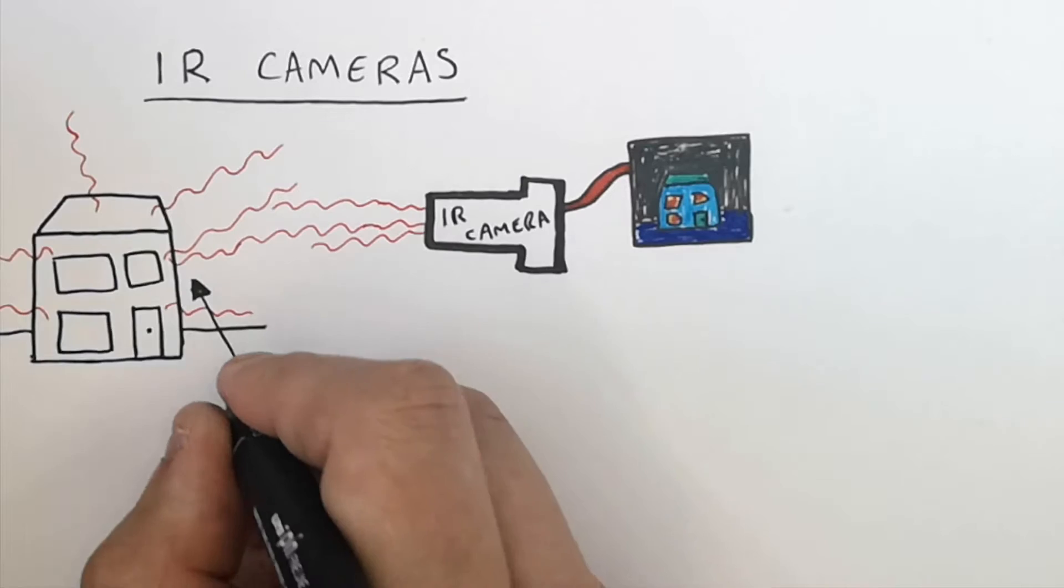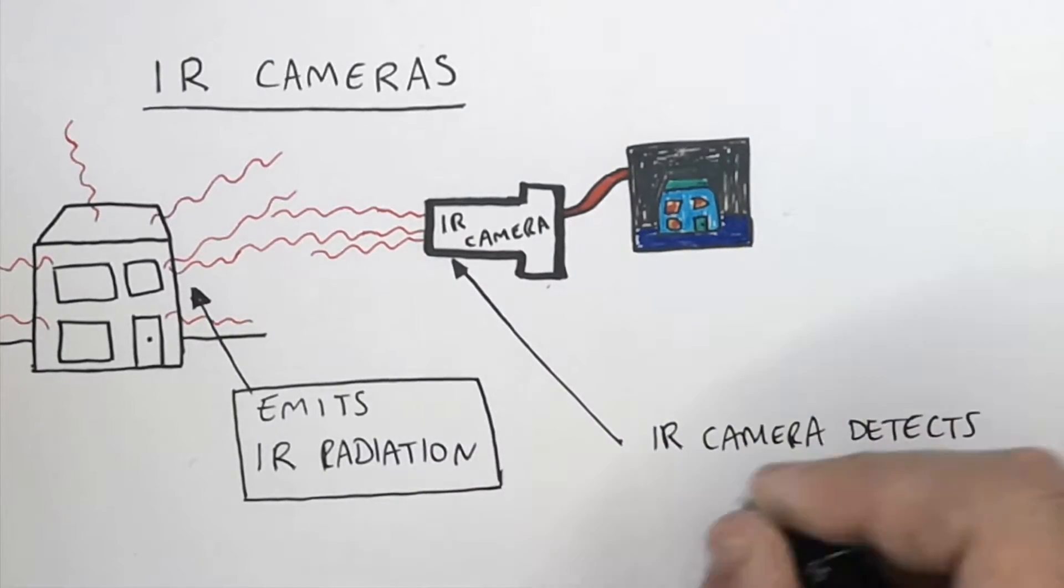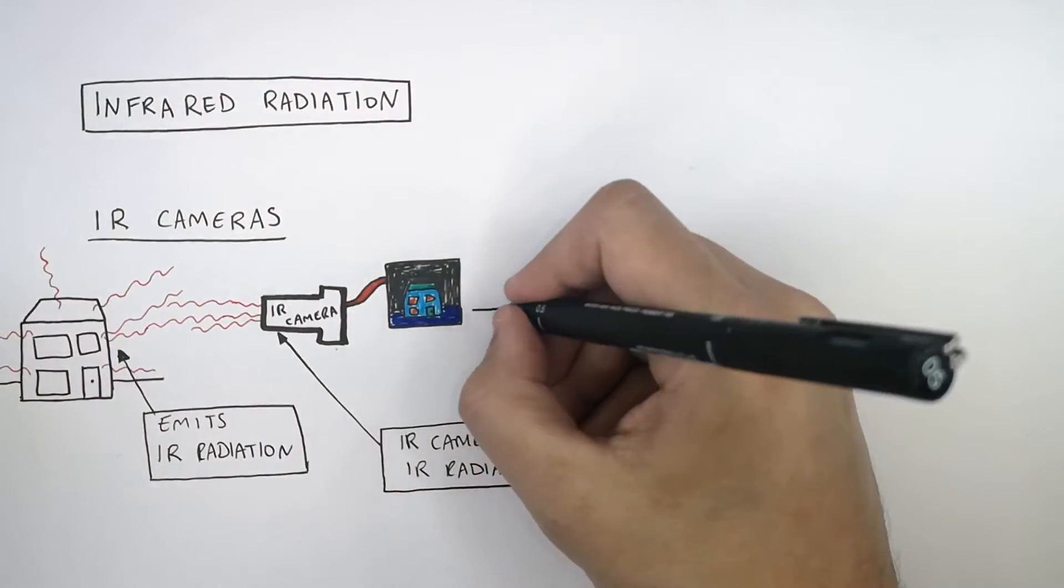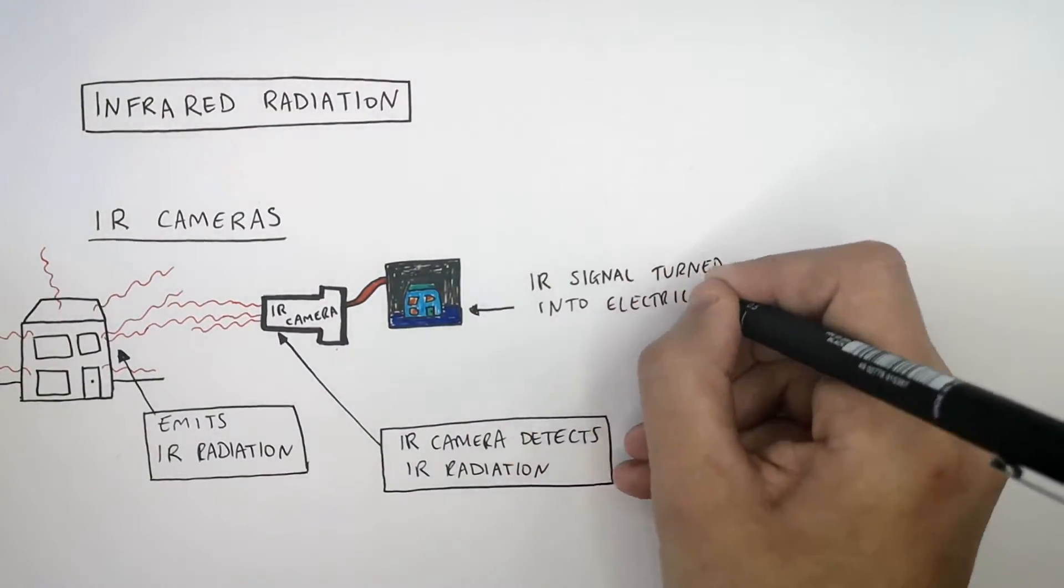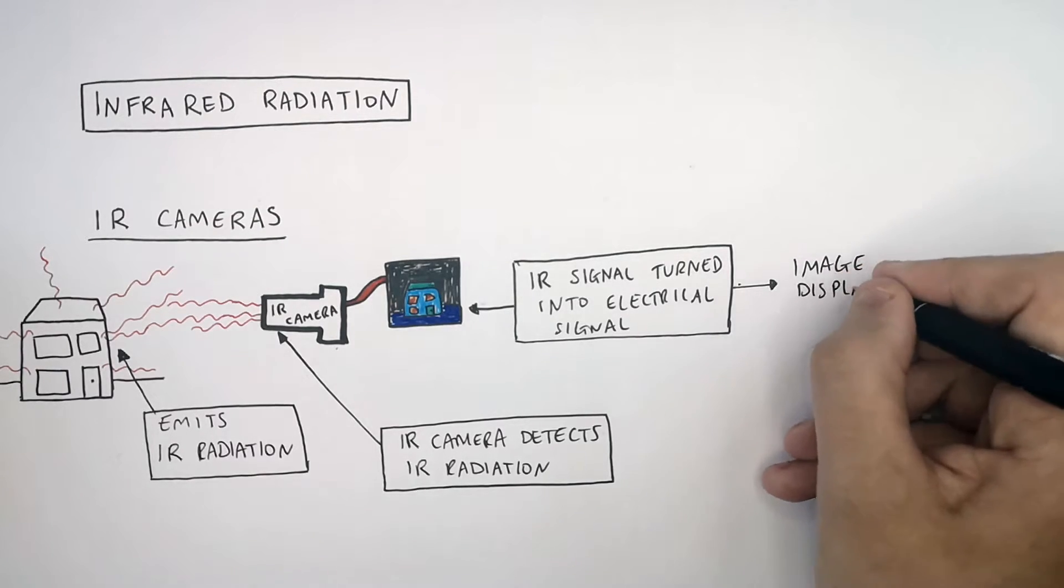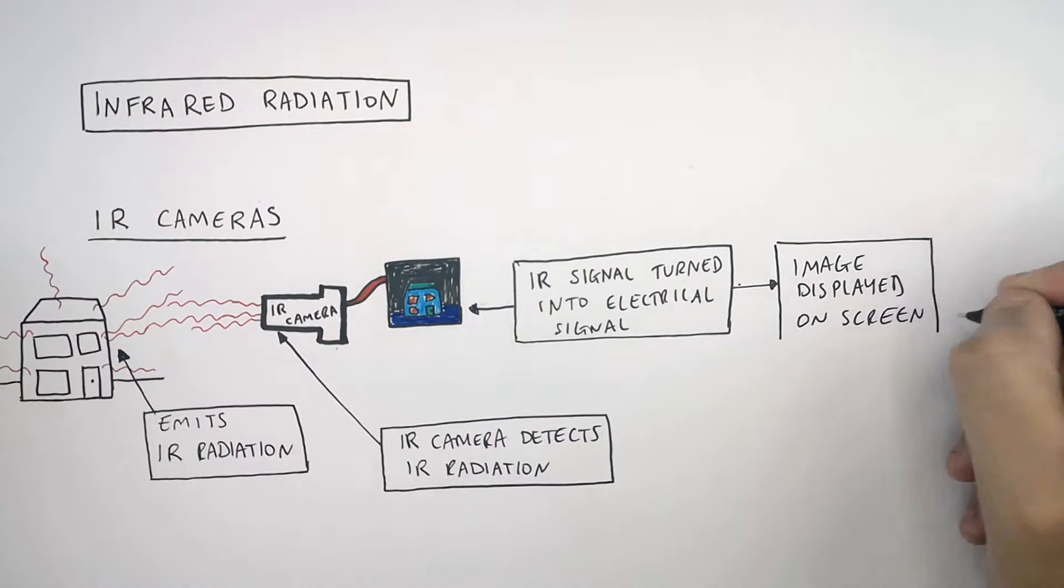The house is going to be emitting infrared radiation from the thermal energy stores that are in the house. The infrared camera detects the infrared radiation being emitted from the house. The infrared signal is turned into an electrical signal by the computer. This means that an image is displayed on the screen to visualize the different levels of infrared radiation being emitted throughout the house.